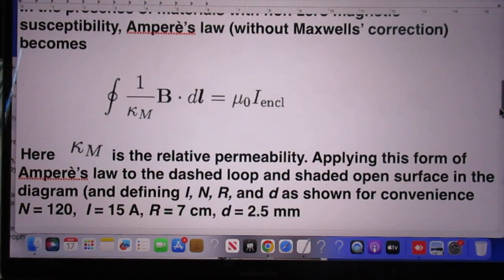Kappa M is the relative permeability. Applying this form of Ampere's law to the dashed loop and shaded open surface in the diagram.